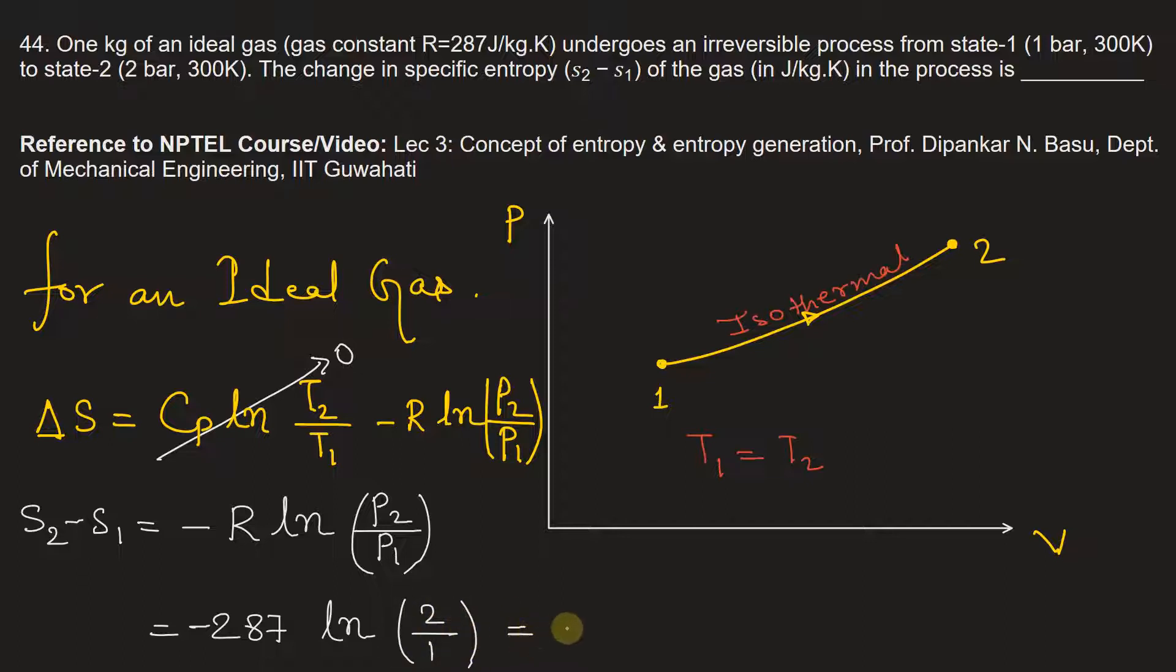This will be equal to minus 287 ln 2, which is equal to minus 198.93 joules per kg Kelvin.